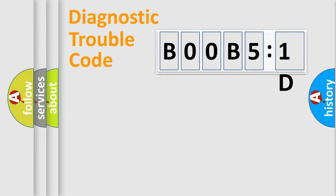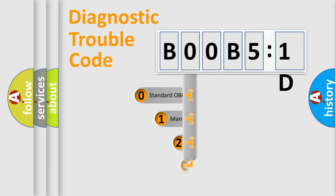Powertrain, Body, Chassis, Network. This distribution is defined in the first character code.